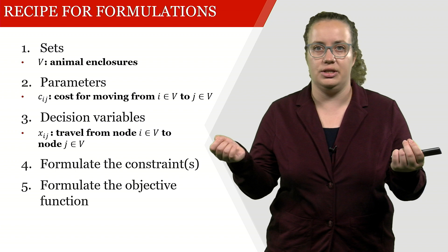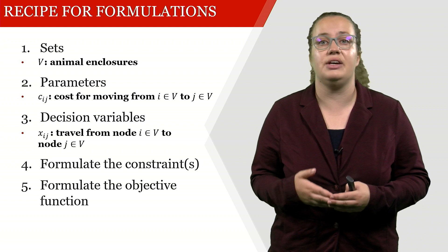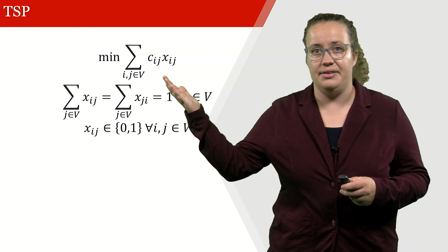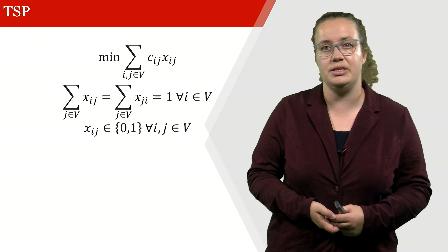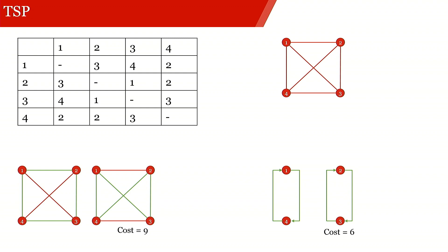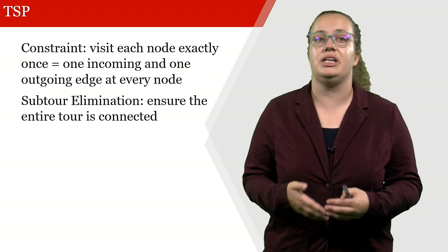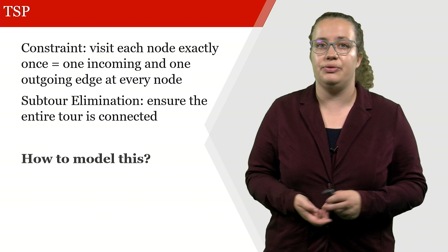Also if we look into the constraints and the objective function, they're very similar to the MTZ formulation. We still have this basic setup with minimising costs as the objective function, then we have flow conservation and visiting every location exactly once, and we also have a domain restriction. What we additionally have to formulate is the so-called subtour elimination constraint. The subtour elimination constraint ensures that the entire tour is connected, and the question is now how do we formulate this?